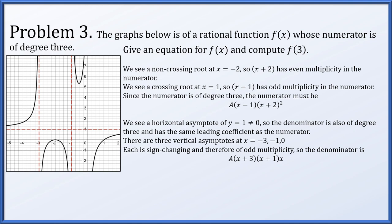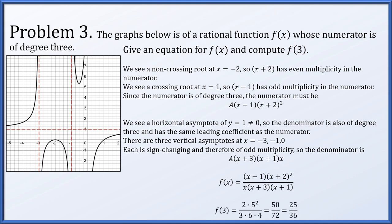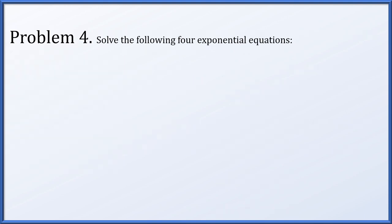Because the horizontal asymptote y = 1 equals the ratio of leading coefficients, the leading coefficients are equal and cancel. Therefore f(x) = (x − 1)(x + 2)² / [x(x + 1)(x + 3)]. Computing f(3): numerator is 2 × 5² = 50, denominator is 3 × 4 × 6 = 72, giving 50/72 = 25/36, which is indeed slightly less than 1, confirming our expectation.